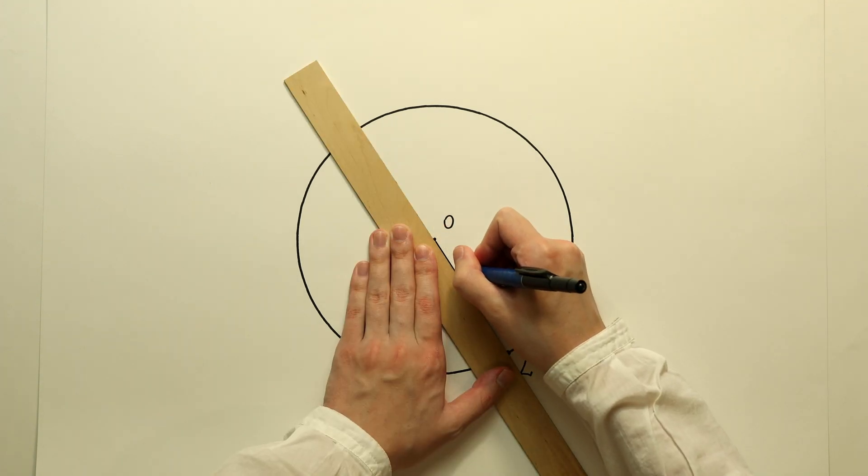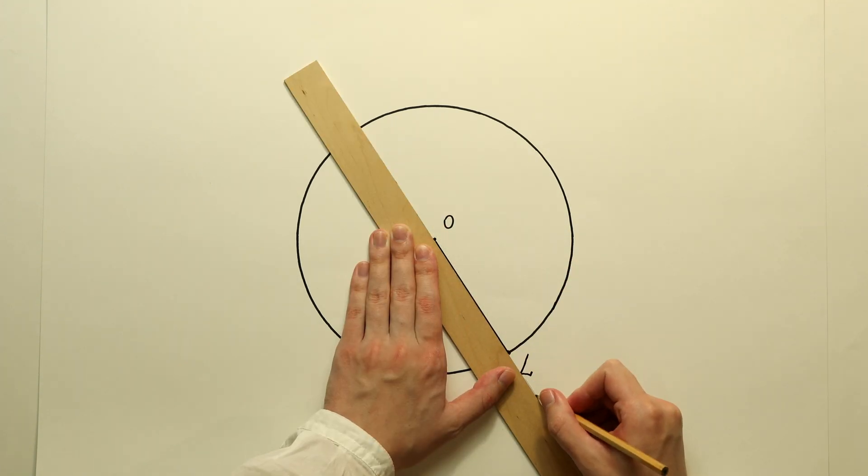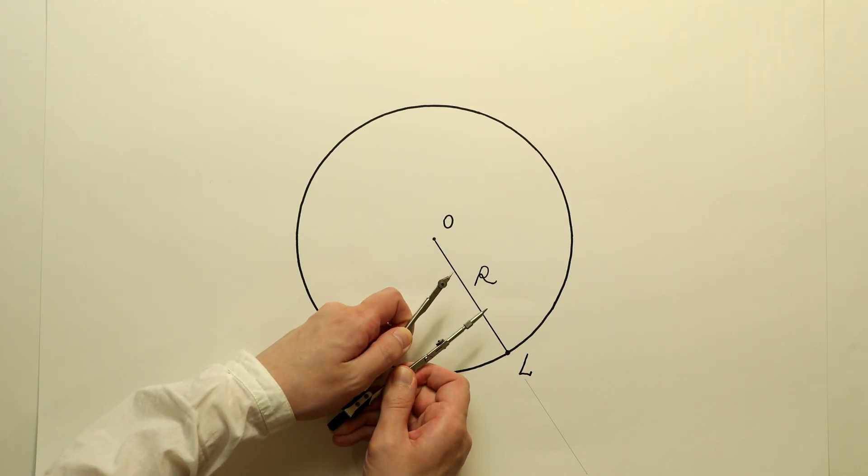It is necessary to draw the radius to point L and extend the radius line outside the circle.